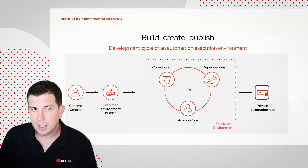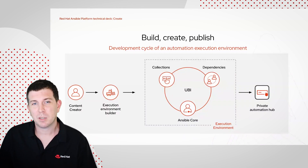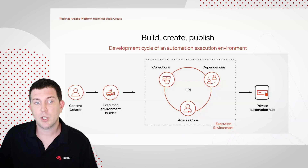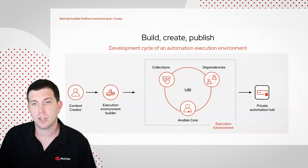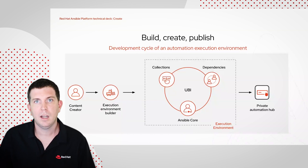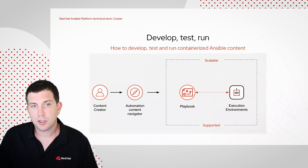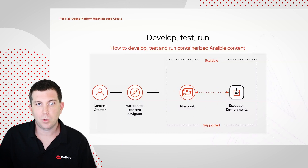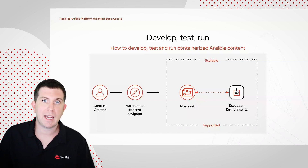The content creator can use another command line tool called Ansible Builder — it's not covered today as it's a slightly different persona, but it's the execution environment builder. This builder command bundles everything together and creates an execution environment that you can publish to your private automation hub. Private automation hub is a local self-hosted or on-premises solution for hosting execution environments and collections. The content creator can also run execution environments using a new command line tool called Automation Content Navigator — the actual command is ansible-navigator, which I'll showcase on the command line shortly.